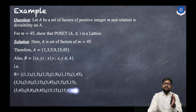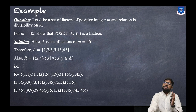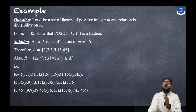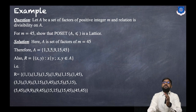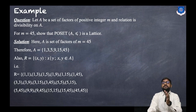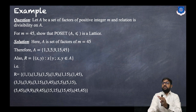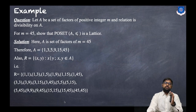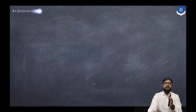The relation pairs include: (1,1), (3,3), (5,5), (9,9), (15,15), (45,45) — each element divides itself — then (1,3), (1,5), (1,45), (3,9), (3,15), (3,45), (5,15), (5,45), and (15,45). The relation is now defined.